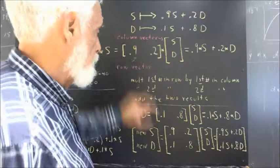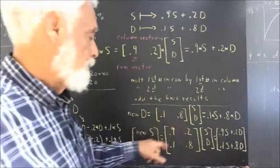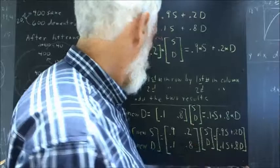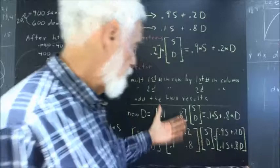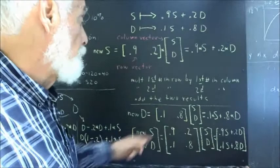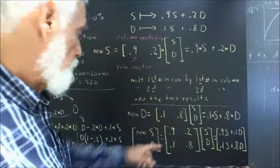Now, the neat thing about this then is that we can combine this and this into one statement. We can say the column vector that has the new S and the new D is equal to some matrix times S, D. And that has to equal 0.9 S plus 0.2 D, which is the new S. If this is going to be the new S, then it has to be this. And the new D has to be this. So the question is what numbers do we put into this thing here? Well, we're going to put the two rows in here. We're going to put the first row first so that when we multiply it by S, D, we get the first result, the new number of sane.